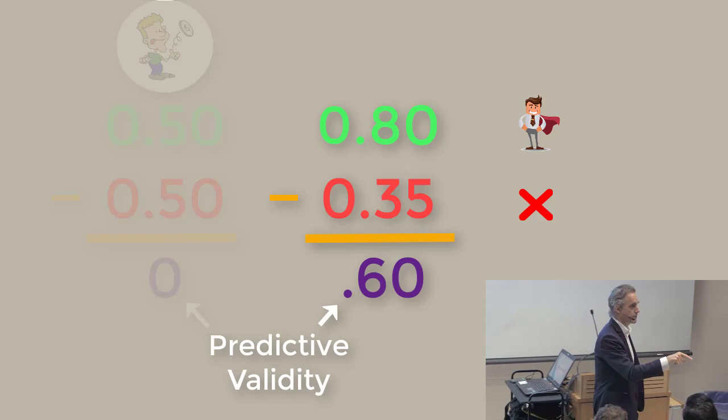At that point, that gives you 0.80 minus 0.20, and so what you've done if you use a predictor that has a correlation coefficient of 0.60.